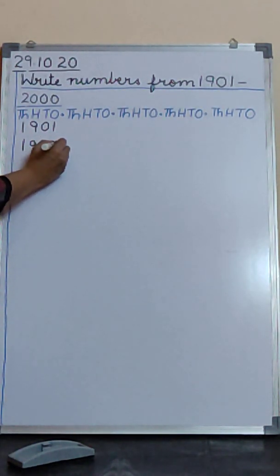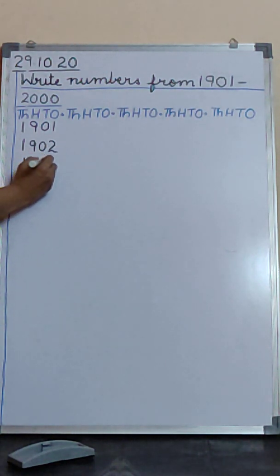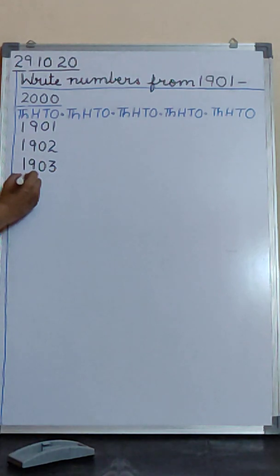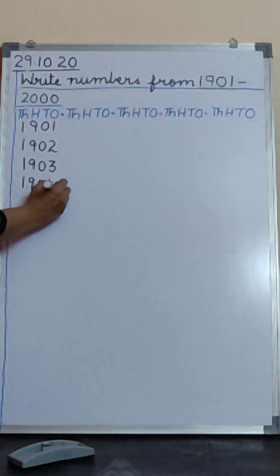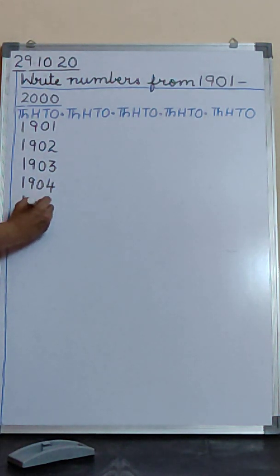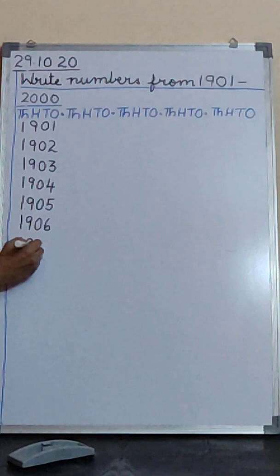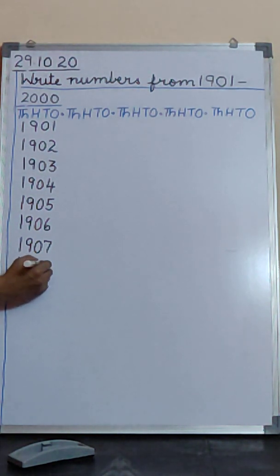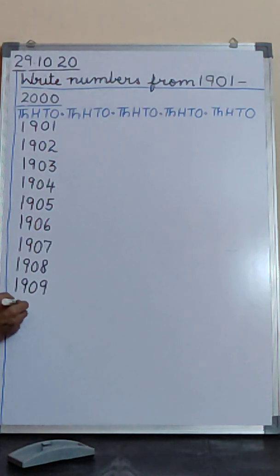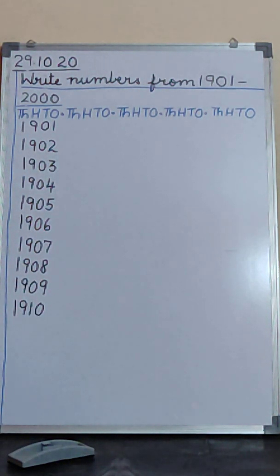1901, 1902, 1903. Please write along with ma'am. 1904, 1905, 1906, 1907, 1908, 1909, 1910. Keep writing with ma'am, along with ma'am.